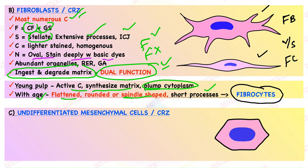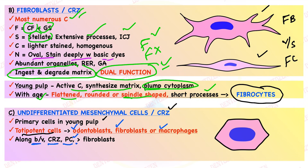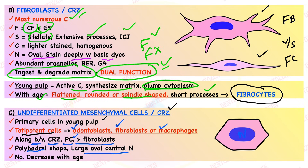Third cell type: undifferentiated mesenchymal cells, also seen in the cell-rich zone. They are primary cells in young pulp and have a totipotent role — whenever there is a need in the pulp, they can differentiate into odontoblasts, fibroblasts, macrophages or any of these cell types. They are found along blood vessels, in the cell-rich zone and pulp core. They are larger than fibroblasts, have a polyhedral shape, a large oval central nucleus, and their number decreases with age.